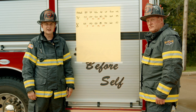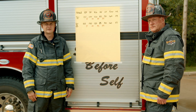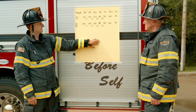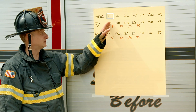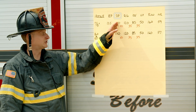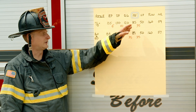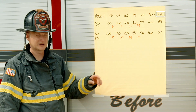Now that we've gotten all this data, we need to make sense of the numbers. We have it all written here on this sheet — the nozzle, the engine pressure, discharge pressure, rig, the 100-foot mark nozzle pressure flow, and nozzle reaction.